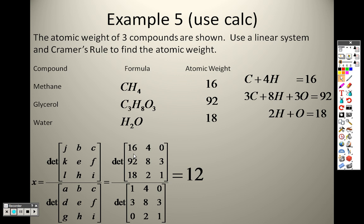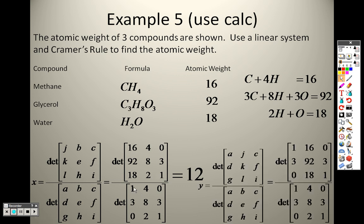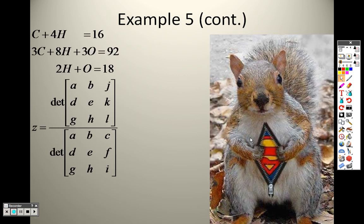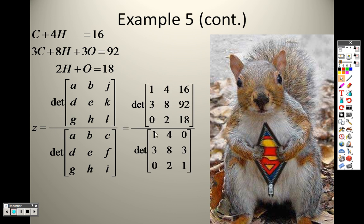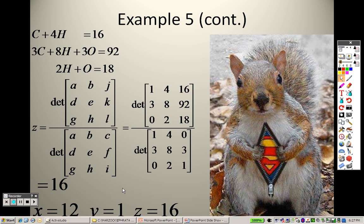This is where I strongly recommend you use the calculator. It's under the matrix function — go to determinant and plug each matrix in. Go to edit and plug the matrices in first. You get that the answer is 12 for the determinant of the top divided by the bottom for X. Now since I'm solving for Y, the bottom is the same but the Y column has 16, 92, and 18. Using the calculator you get 1 for Y. For Z, the X's and Y's are the same, and the answer went in for Z, giving 16. So X, Y, and Z are 12, 1, and 16.